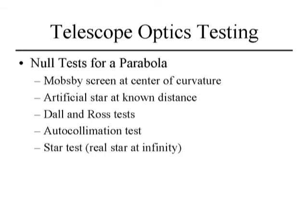The tests I just described define the parabola by measuring spherical aberration. More interesting are null tests — you have one test answer with no interim results requiring further analysis. A sphere at center of curvature is a null test: uniform graying with a knife, straight parallel lines with a Ronchi screen. Several tests produce a null return in one way or another: a Mobsby screen used at center of curvature, a distant artificial star, the Dall and Ross test, the auto-collimation test — in my opinion the best test, and the one we use here in the workshop — and the star test.